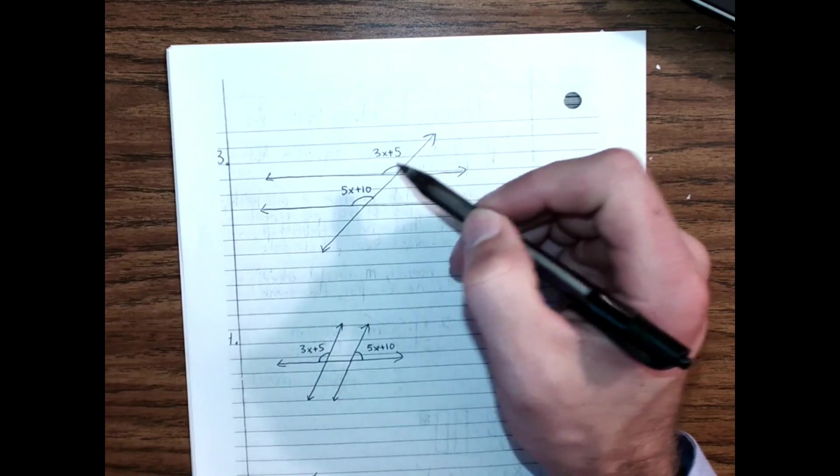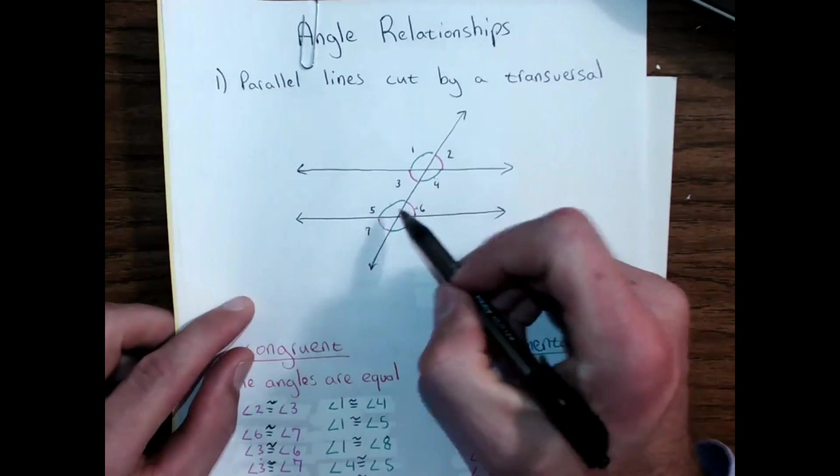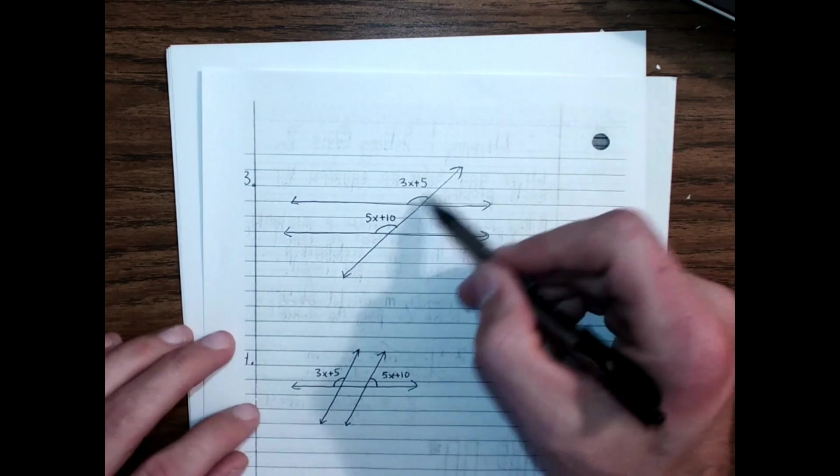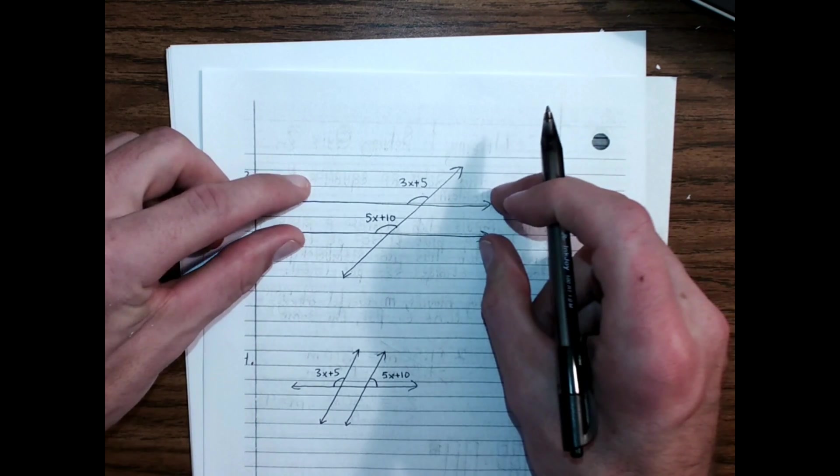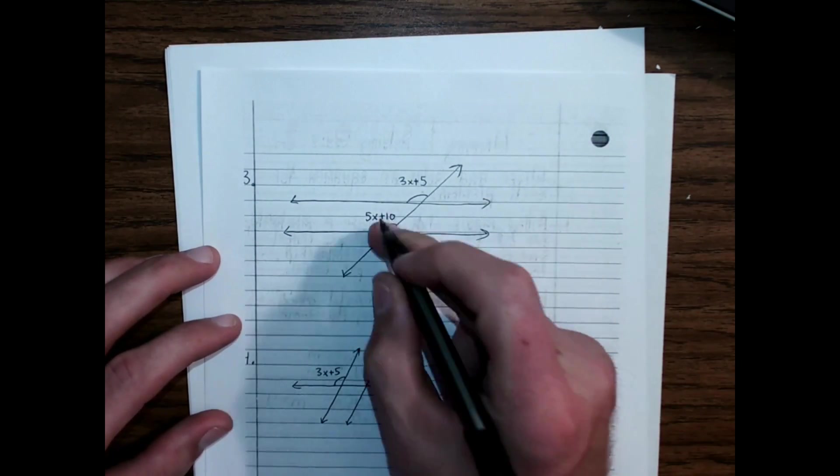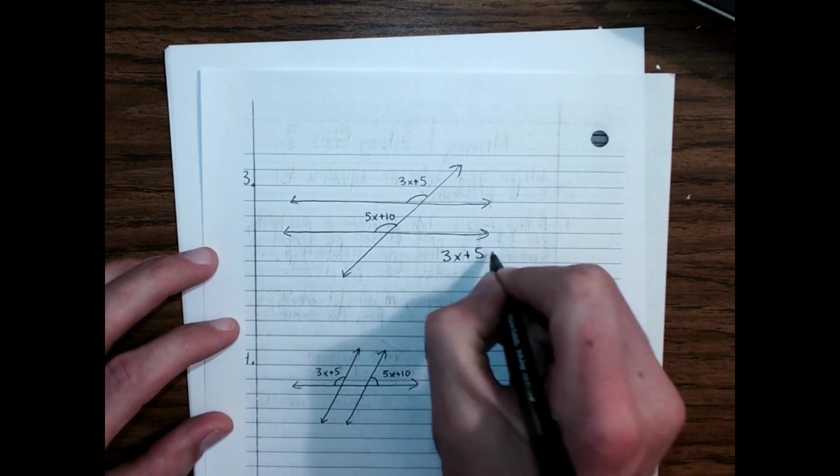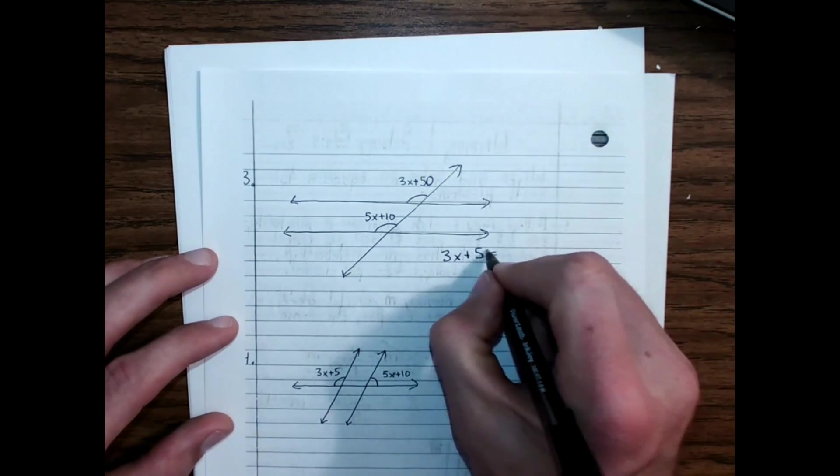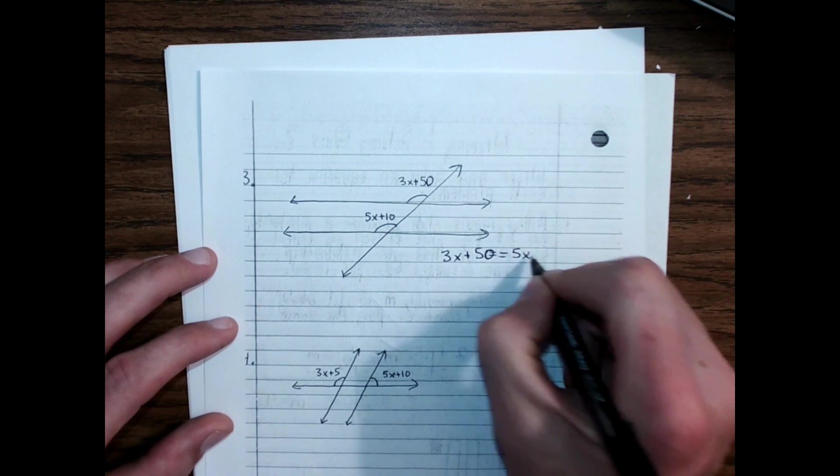These two angle pairs are congruent. Look at their position in the diagram. They're in the same spot, just sort of moved up and down. If I move these two together, they'd be right on top of each other. They'd be the same. If they are congruent, then that means they are equal. So 3X plus 50 equals 5X plus 10.